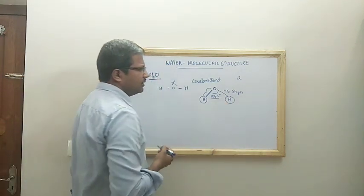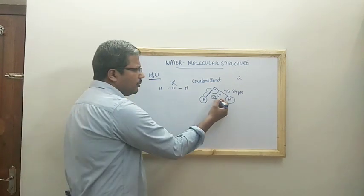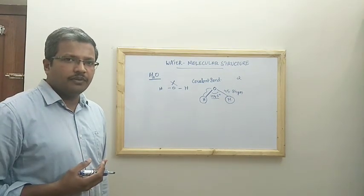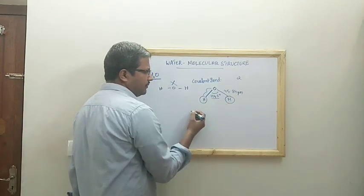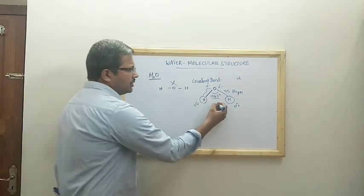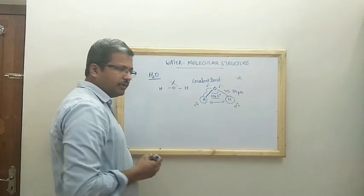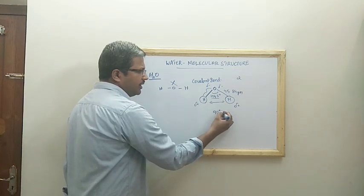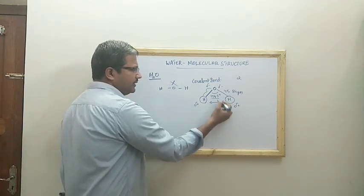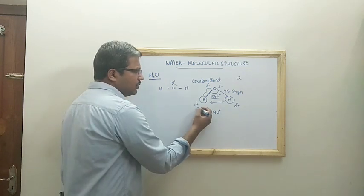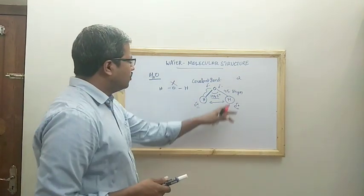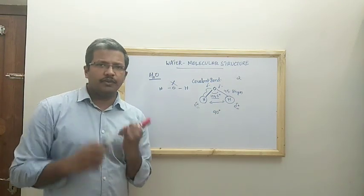The bond angle of 104.5 degrees is much greater than the normal covalent bond angle of around 90 degrees. This is due to the mutual repulsion between the partial positive charges carried by the two hydrogen atoms. Because of this repulsion between the positive charges, the bond angle increases beyond the typical 90 degrees.